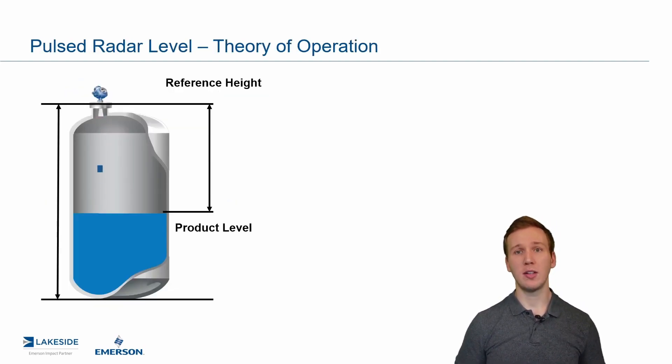If we look at pulsed radar, this is what many of us might be familiar with. It is a time of flight measurement. As you can see pictured beside me here, we have our non-contacting radar mounted at some sort of reference height, and then the product is a certain distance away. As you can see, it is shoot, waiting, and then receiving a reflection back off of that product's surface.